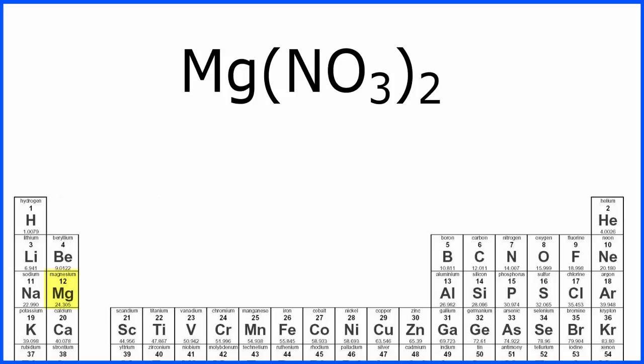For magnesium, we have 24.31 grams per mole, nitrogen is 14.01 grams per mole, and then our oxygen, we have 15.999, let's call that 16.00, and that'll be grams per mole.